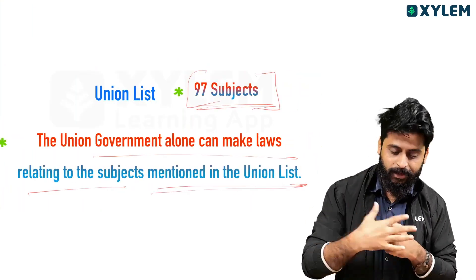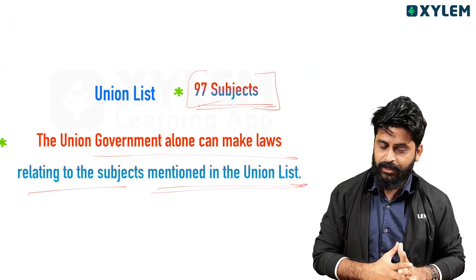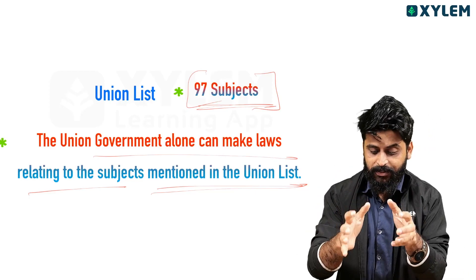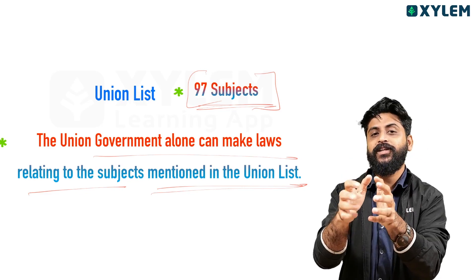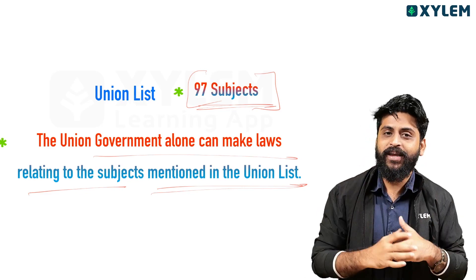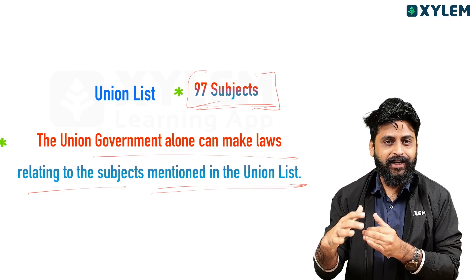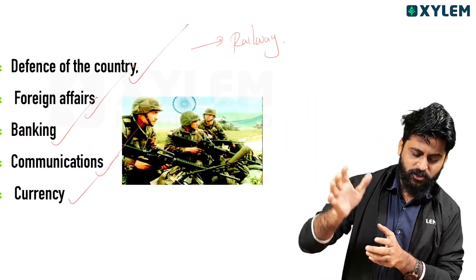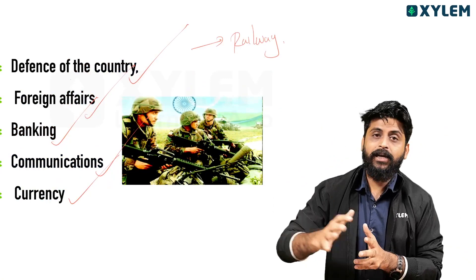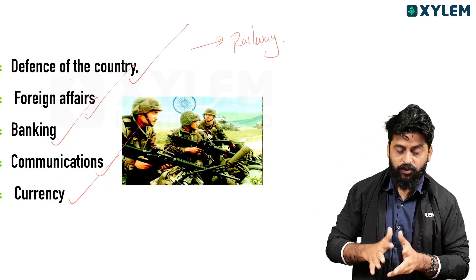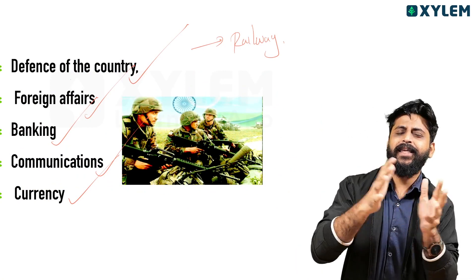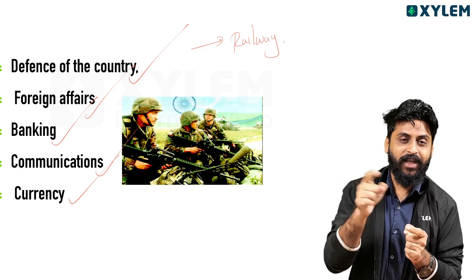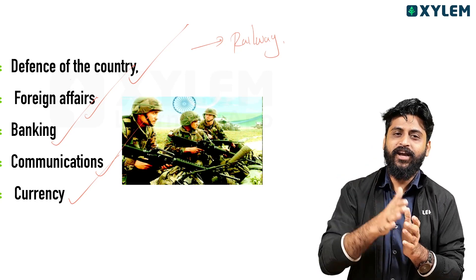What are the three lists? The union government alone can make laws relating to the subjects mentioned in the union list. The union government — also called central government or general government — covers the most important topics: the defense of the country, foreign affairs, banking, communications, and currency. These are the subjects in the union list.